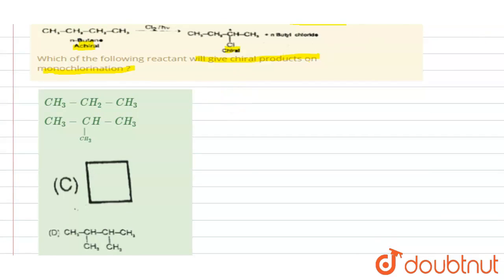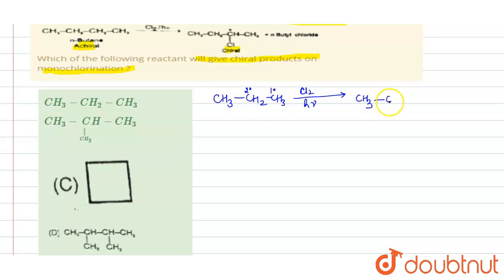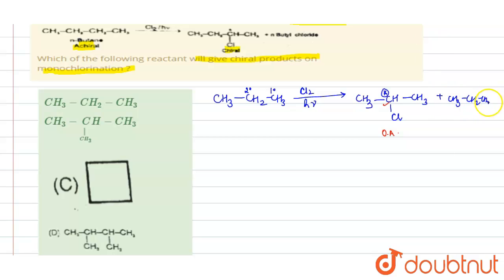The first compound is n-propane (CH3-CH2-CH2-). On monochlorination in the presence of sunlight, attack can occur on the secondary carbon or the primary carbon. Attack on the secondary carbon gives a product with a chiral carbon, which is an optically active compound. Attack on the primary carbon gives CH3-CH2-CH2Cl, which has no chiral carbon and is optically inactive. So the first compound can give a chiral product on monochlorination.